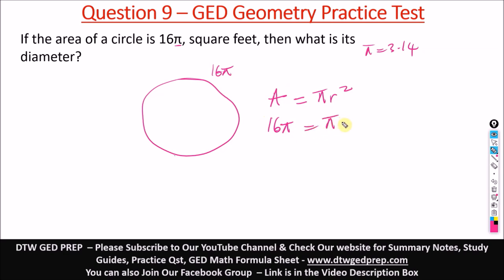16π equals π r squared. So here we can just easily, to make r squared stand alone, we divide both sides by π. Divide by π, this π cancels here and it cancels out this π here.